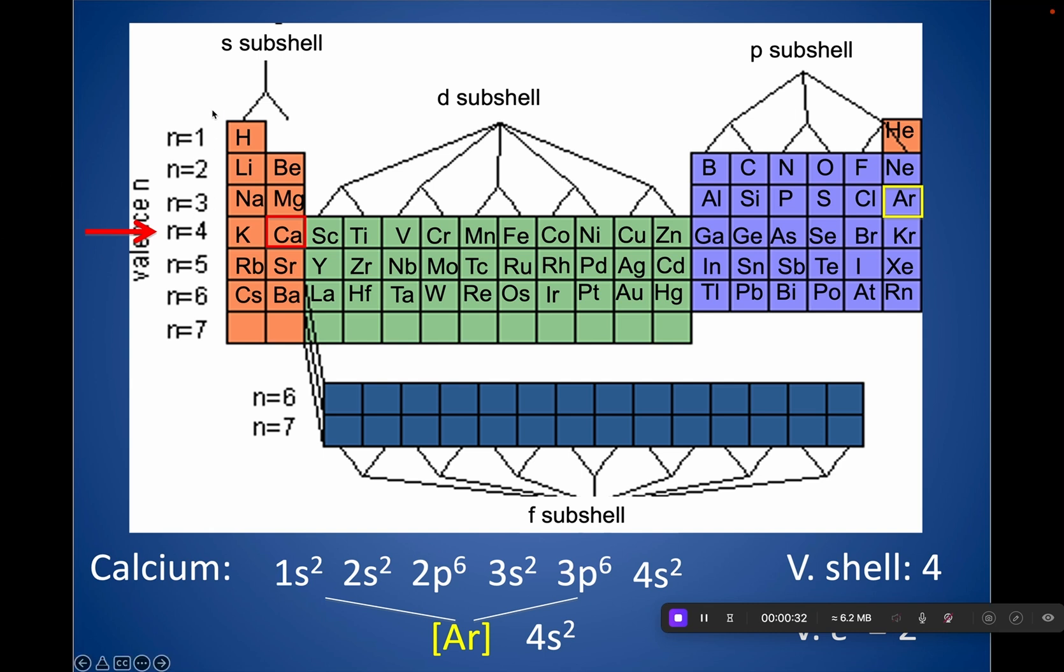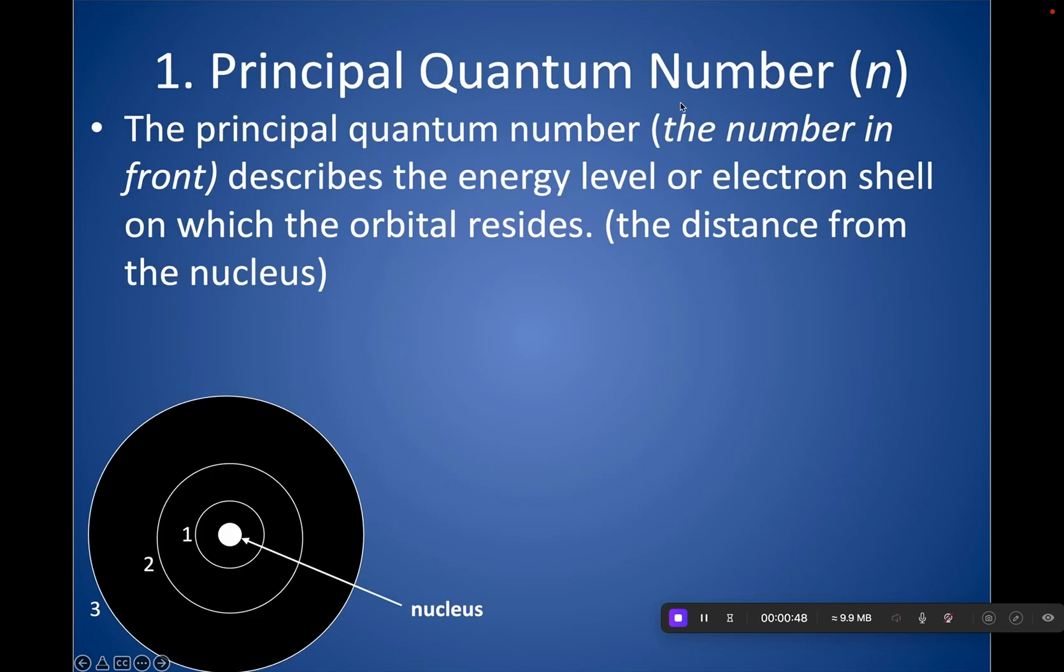And as you saw on the colored periodic table I had you use, you might see these n equals. A lot of times we give, as a shortcut or an abbreviation, we write n to stand for the energy level or the electron shell. And we call this the principal quantum number. And if you get into quantum numbers, which is a little bit beyond what the AP does, there's other quantum numbers, but this particular one is called the principal quantum number.